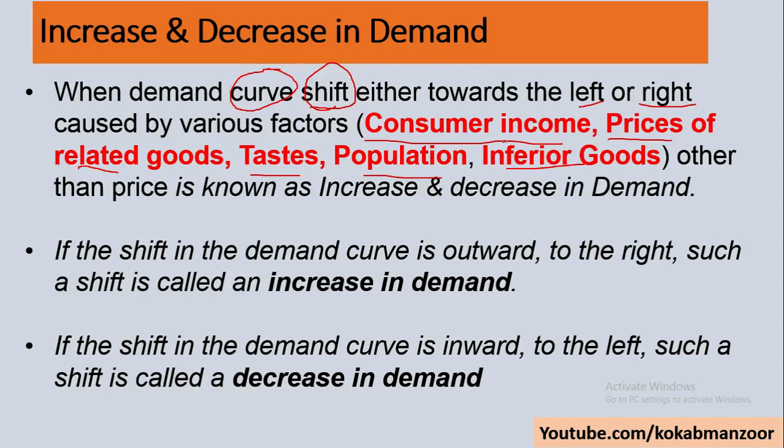When you have more money you may buy more. For example, when you are poor you might visit a fast food restaurant once a quarter, but when your income increases you might visit twice a month or every week. This increase in consumption of fast food is because of your income. This change in demand is known as a shift in demand — or rise in demand, increase in demand.